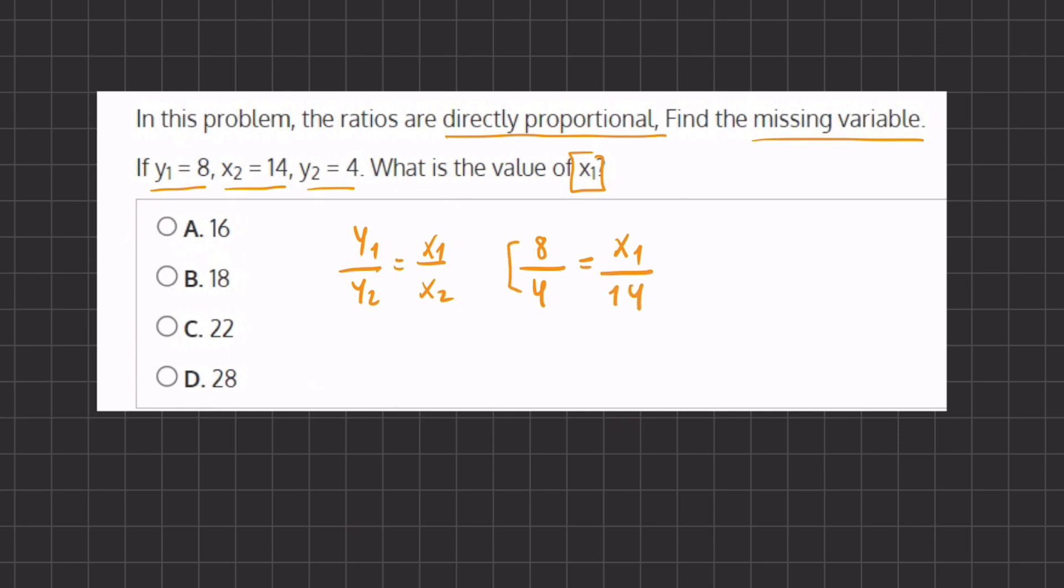Now we can simplify this side of the equation. We have 8 divided by 4 which is 2 because 4 goes into 8 two times, equals x1 divided by 14. Now we want to find the value of x1.